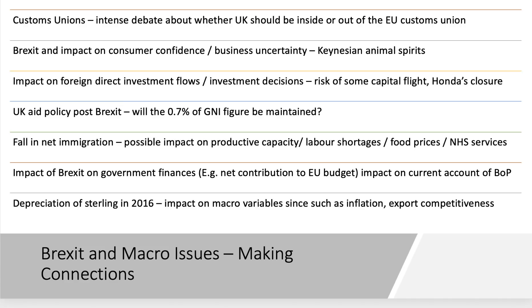A hugely important issue is labour migration, something which affects both the demand and the supply side of the economy. We have seen a fall in net migration in the UK in the last couple of years, but equally there's been a rise in immigration from non-EU countries — an unintended consequence. So what's the impact of Brexit on immigration? The possible effects on the productive capacity of the economy, on labour shortages in key industries, on food prices, and on the ability to staff and fund key public services such as the NHS.